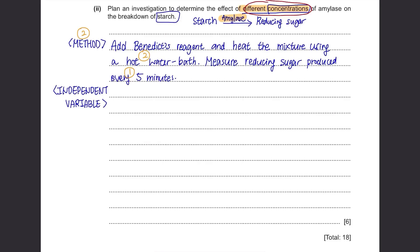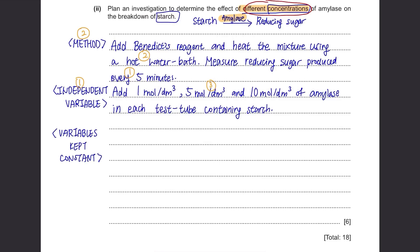Now we need to control the independent variable. As mentioned in the question, we are varying the concentration of amylase so write a way to do it. Add 1 mol per dm cubed, 5 mol per dm cubed and 10 mol per dm cubed of amylase in each test tube containing starch. Next are the variables that need to be kept constant. Firstly, the type of amylase that we use should be the same. Different amylase may have different speeds of breaking down starch. Then the concentration of starch should be kept constant. Be careful, the concentration of amylase should be different but for starch, it should remain the same.